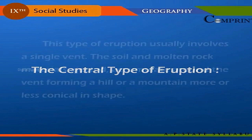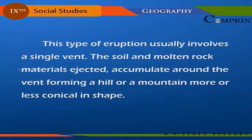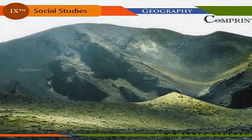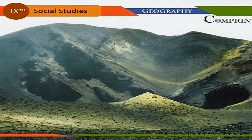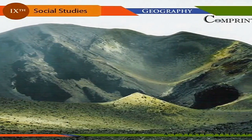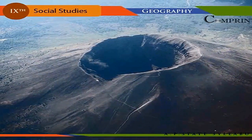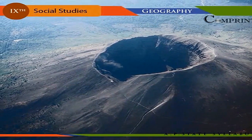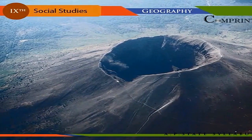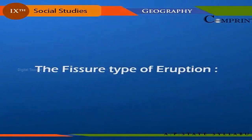The central type of eruption usually involves a single vent. The solid and molten rock material ejected accumulates around the vent, forming a hill or mountain more or less conical in shape. Mount Etna in Sicily, Cotopaxi in Ecuador, Vesuvius in Italy, Fujiyama in Japan, and Barren Island in the Andaman Islands of India are typical examples of cone-shaped volcanic mountains in the world.